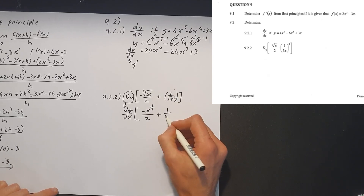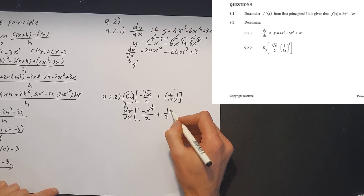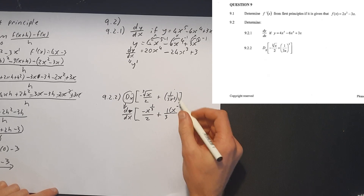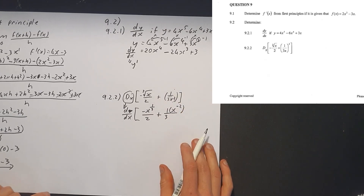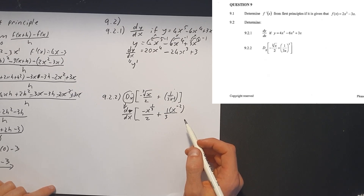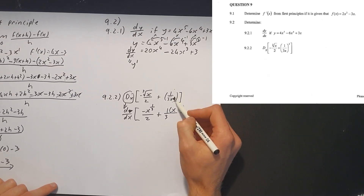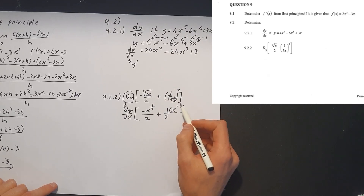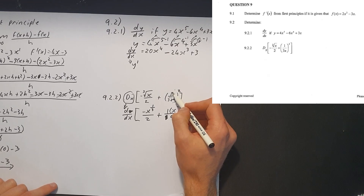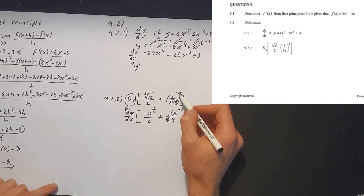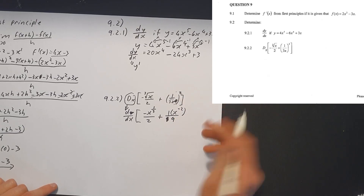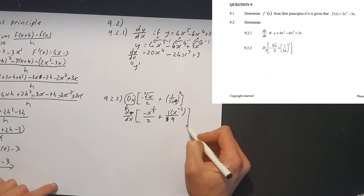Plus: I'm taking the x squared to the top as x to the negative 2, leaving the denominator as 3. Wait — actually I had something wrong there. The 2 is on the outside, so when I distribute: 1 squared is 1, 3 squared is 9, and x squared is x squared. So the denominator should be 9, not 3. So we have d/dx of minus x to the 1 over 3, all over 2, plus x to the negative 2 all over 9.